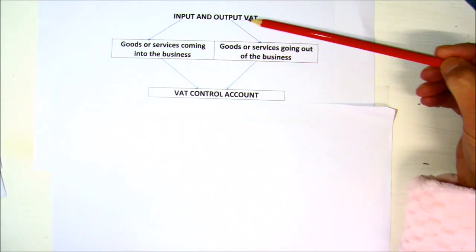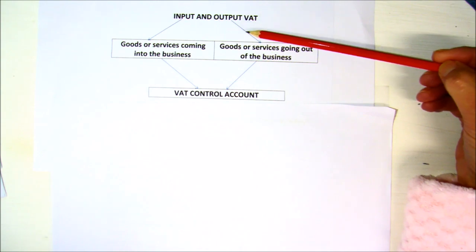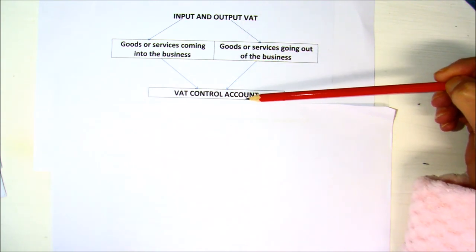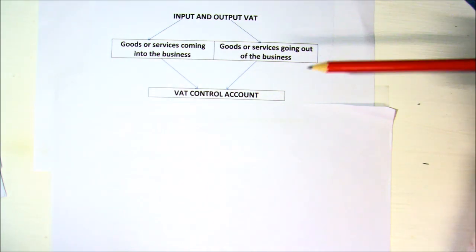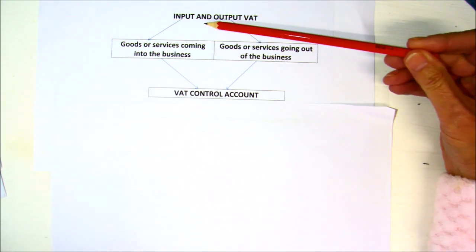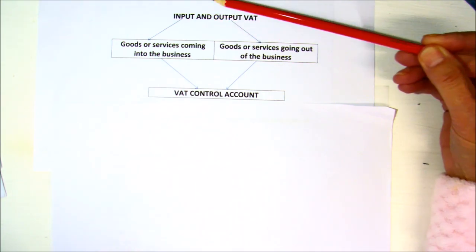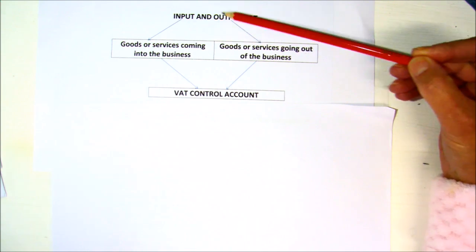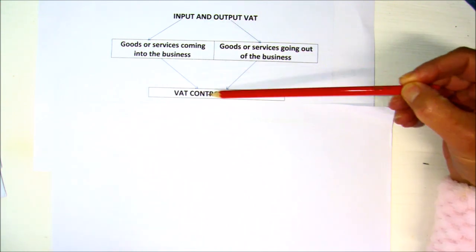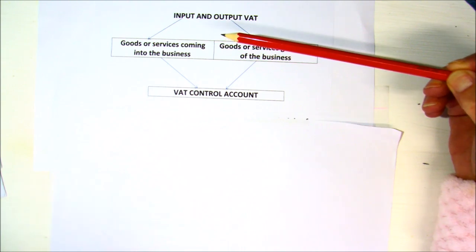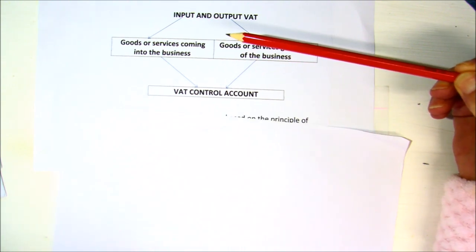The VAT control account is just a summary of the input and output VAT brought together, and every second month you have to make a payment to SARS. The first thing you need to understand is the difference, and you need to know how this affects the amount that you owe SARS.